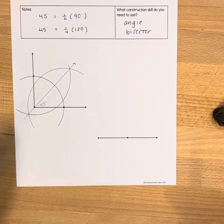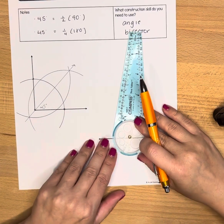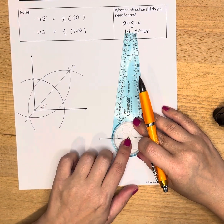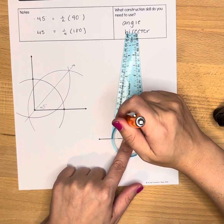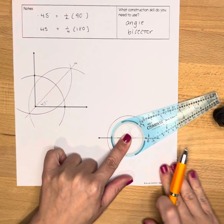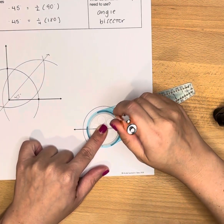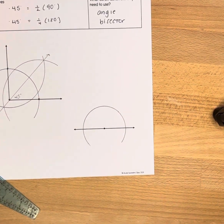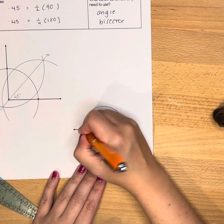I'm going to first bisect this angle. I'm going to put the compass on the vertex and make an arc so that it crosses the given rays, and I'm going to mark those two intersections.